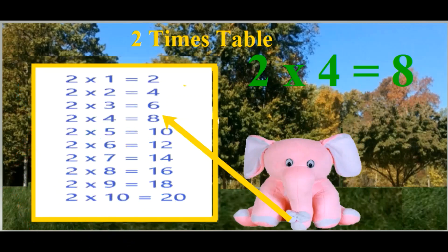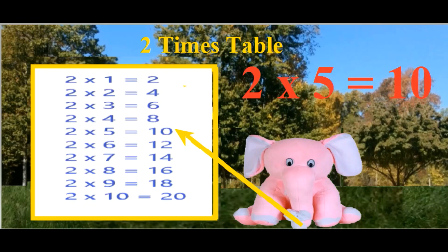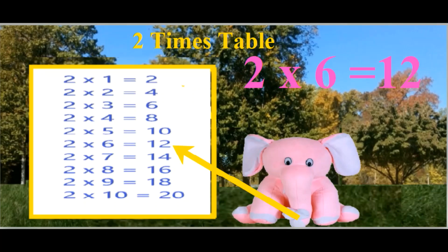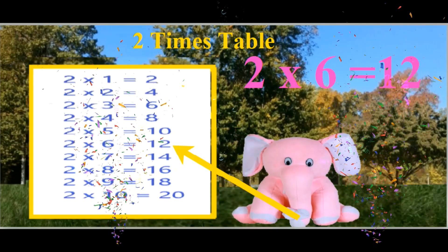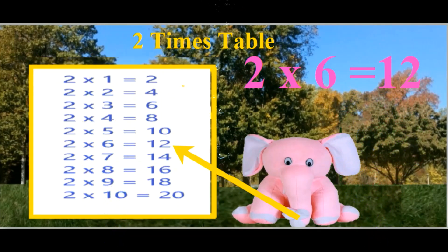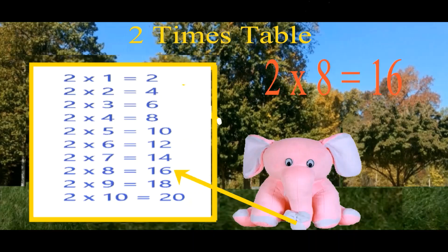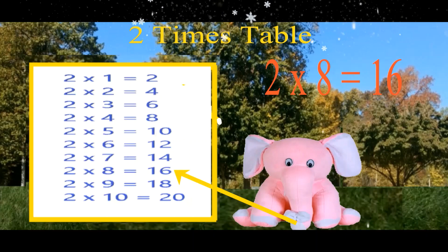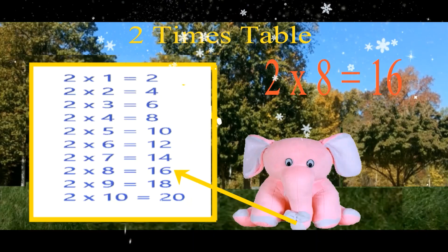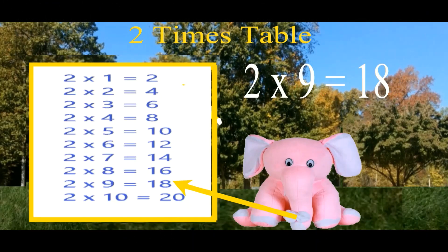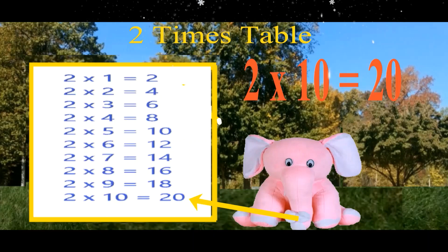Two fives are ten. Two sixes are twelve. Two sevens are fourteen. Two eights are sixteen. Two nines are eighteen. Two tens are twenty.